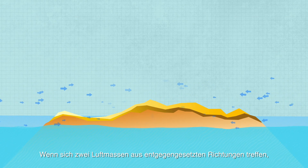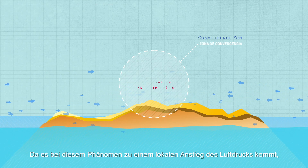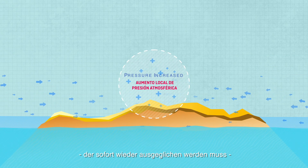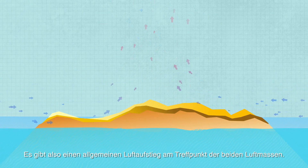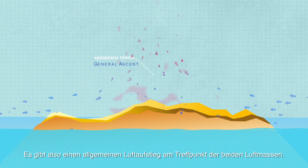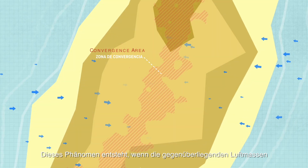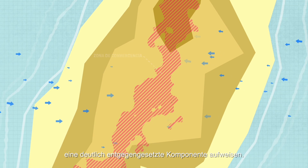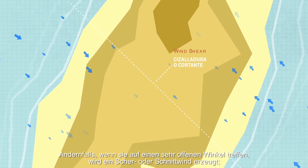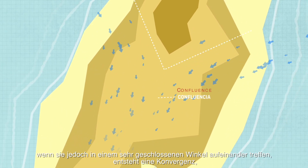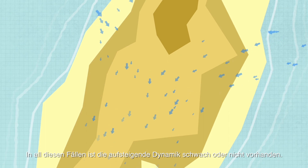When two air masses coming from opposite directions meet, convergence takes place. This phenomenon produces a local increase in atmospheric pressure, and the only way for the excess wind to go is upwards, causing a general ascent at the meeting point of both air masses. This effect occurs when the opposite air masses bear significantly opposite wind directions. Otherwise, if they meet at a very open angle, a wind shear or wind cut will originate. If they meet at a very closed angle, confluence will start, like two adjoining rivers. In all these cases the rising movement will be weak or even absent.